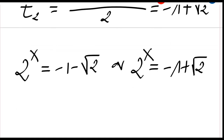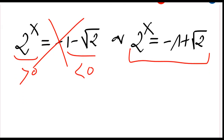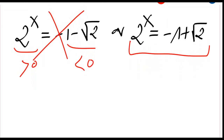Now we know that this first value is negative and this second value is positive. So the first equation can never hold — it has no solution in ℝ since we are solving our equation in ℝ. So let's just focus on the second equation.